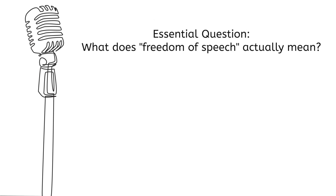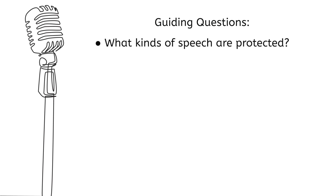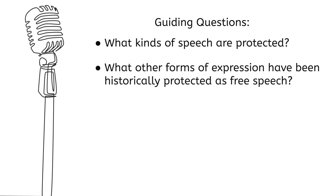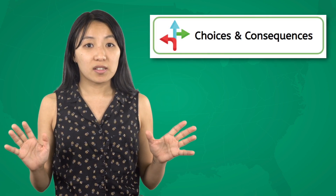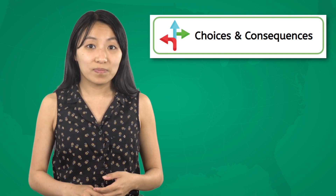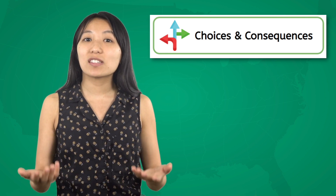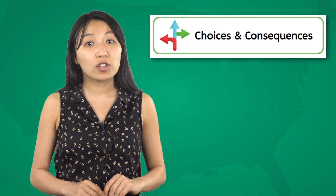In this lesson, we're going to examine different kinds of speech to answer our essential question: what does freedom of speech actually mean? Our guiding questions are: what kinds of speech are protected? What other forms of expression have been historically protected as free speech? And what kinds of speech are not protected? We will also focus on the theme of choices and consequences. Often when we study civil rights, we focus on what we are allowed to do. However, as members of a society, we also have to consider the consequences of our actions and how we can exercise our rights without infringing on the rights of others.